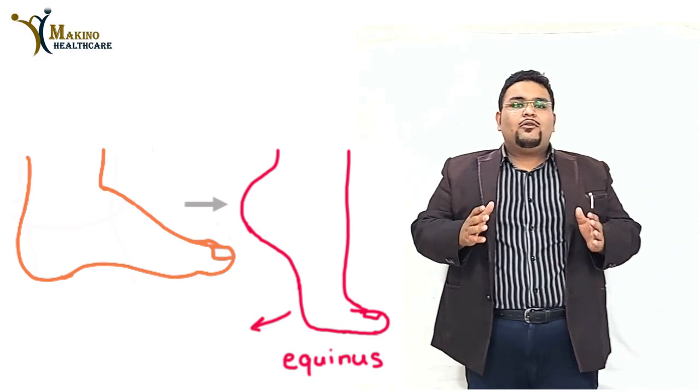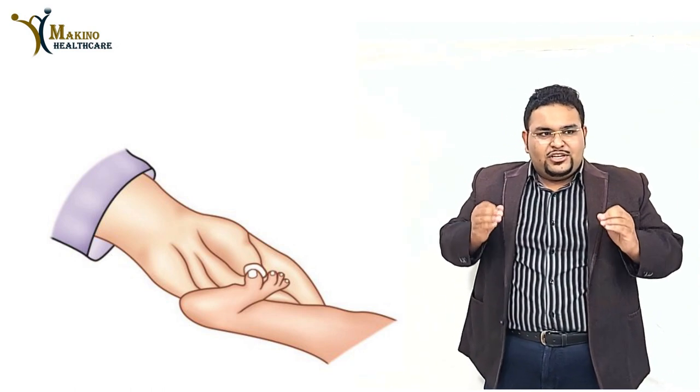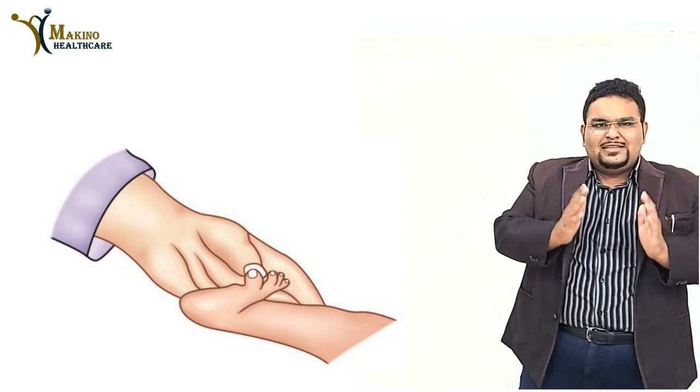To diagnose CTEV, we use the dorsiflexion test. In a normal foot, dorsiflexion allows the dorsal aspect of the foot to touch the shin of the tibia, but in club foot this does not happen. There is also postural CTEV, which differs from true CTEV in that there is no restriction of mobility or contractures — this differentiates postural CTEV from true CTEV.